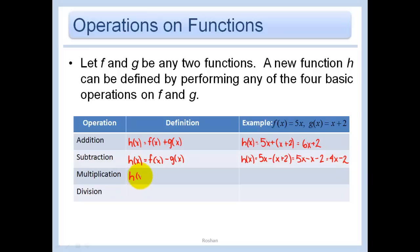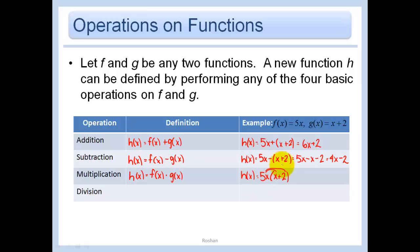Multiplication: f of x times g of x. In my example function, that would require doing 5x times x plus 2. So I have to distribute this 5x, and I get 5x squared plus 10x.